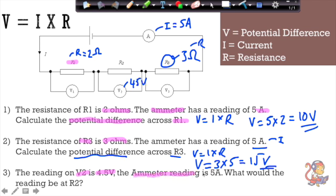The ammeter reading is 5 amps. What would the reading be at R2? So the ammeter reading is 5 amps, that gives me my I. I've got my V, and I've been asked to calculate R, which is the resistance across this resistor here.